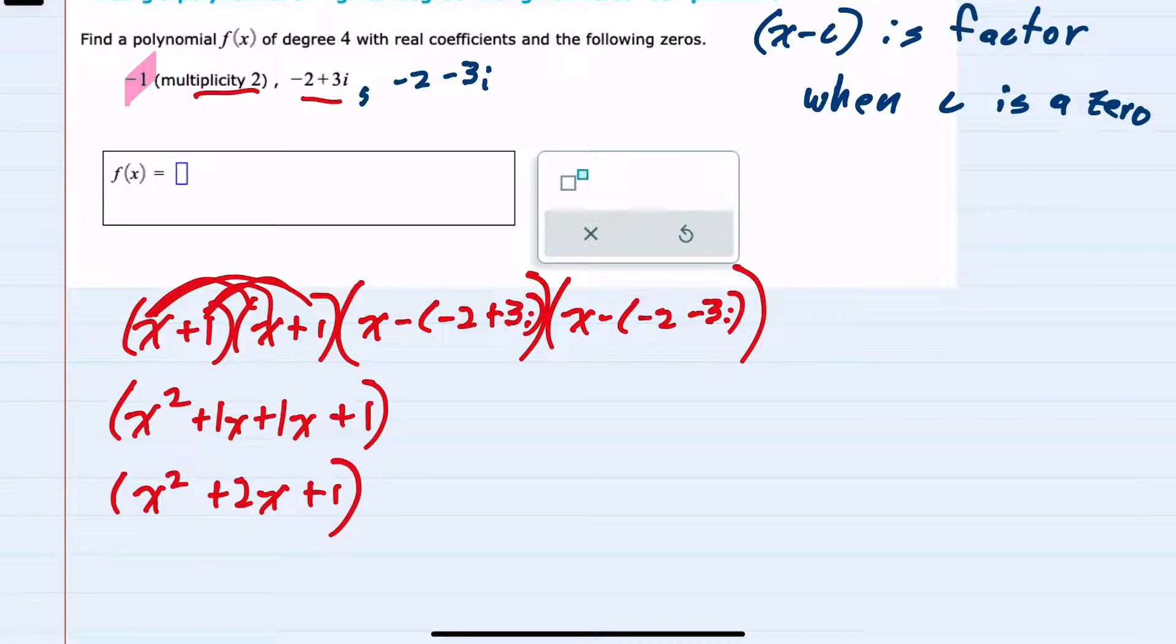And then for the second two, I also want to distribute. Here I'll start with x times x is again x squared, x times this complex number. Notice that the sign outside is negative, so I'm distributing a negative x inside that parentheses. This would become a positive 2x. And then distributing the negative x to the second part of that complex number would be plus 3ix.